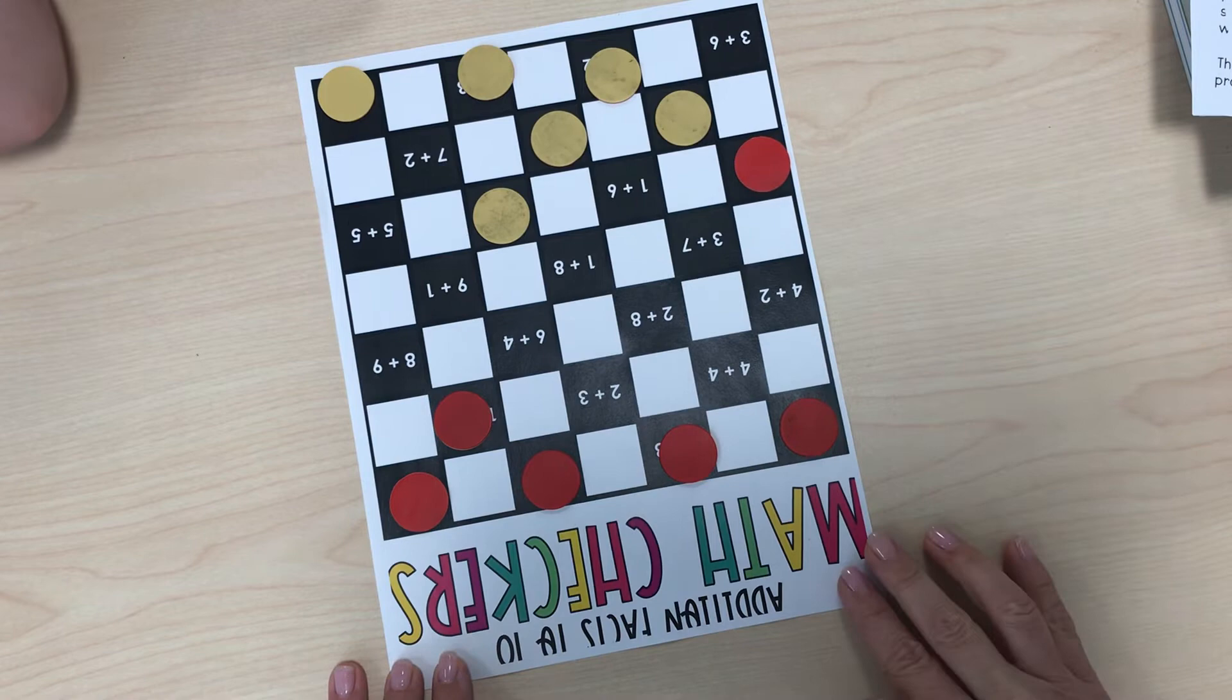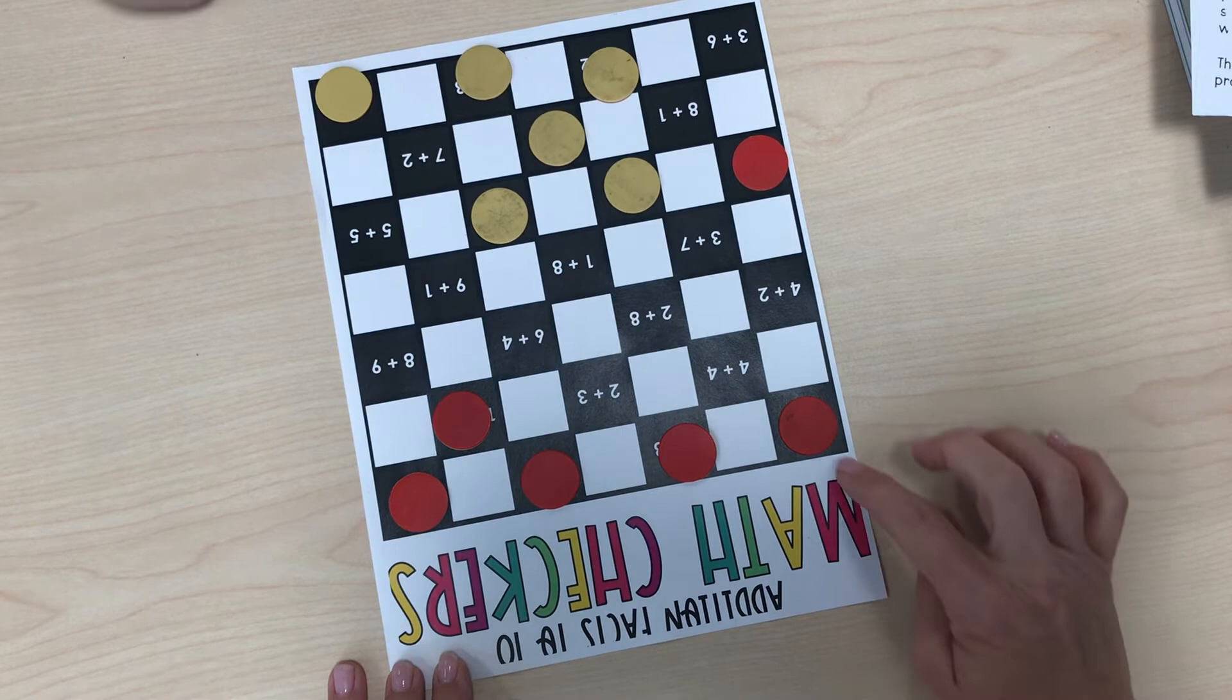Okay Jack, your turn. So I'm going to... 1 plus 6 is 8. 7. Good. 4 plus 4 is 8. 1 plus 8 is 9.